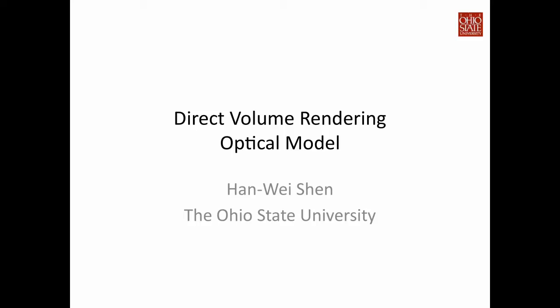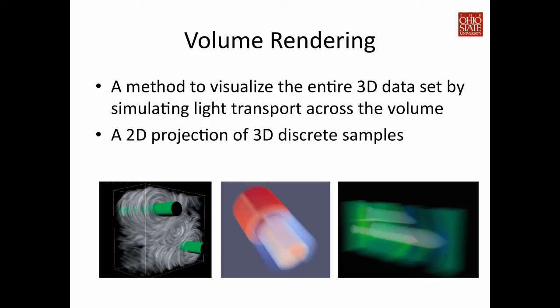What is volume rendering? Volume rendering is a method used to visualize 3D data in its entirety. It is done by simulating light transporting through the space. You can imagine volume rendering as a projection method — every data point in space, we project to the screen. Before we project a data point, we convert the numerical value into optical properties such as color and opacity. Images below are examples of volume rendering generated from different scientific datasets. One advantage of volume rendering is that you can look at the entire data without having the need to produce intermediate geometry such as ISO surfaces.